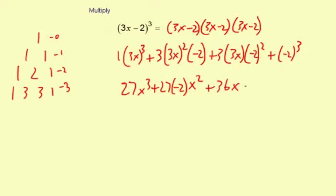Then minus 8, because (-2)³ is -8. So let me simplify one more step: 27x³, and then 27 times -2 is -54, so -54x² + 36x - 8.